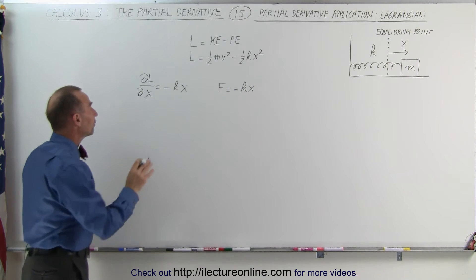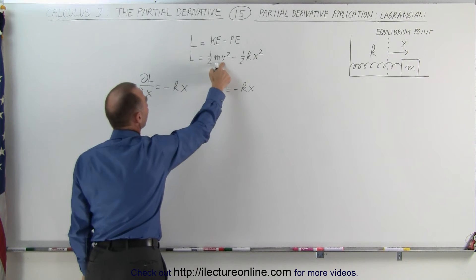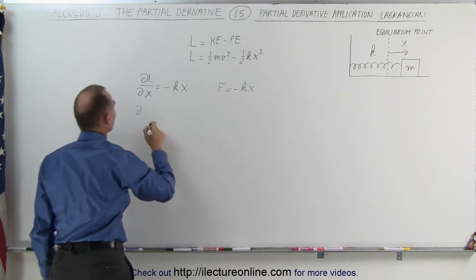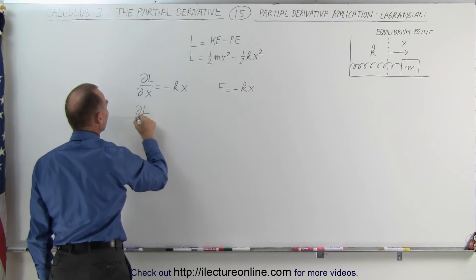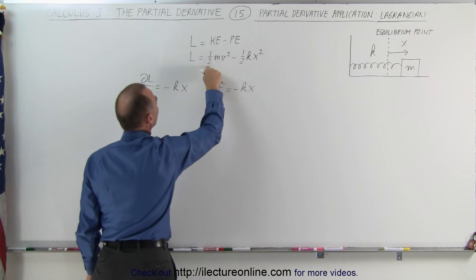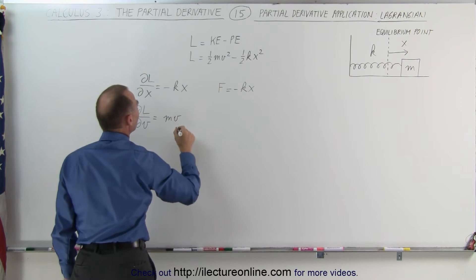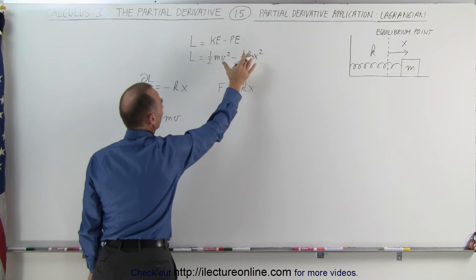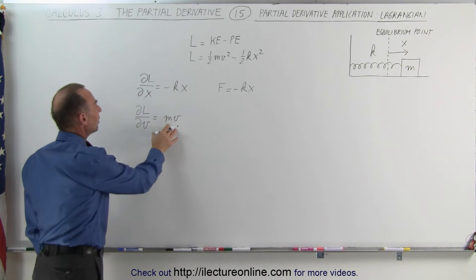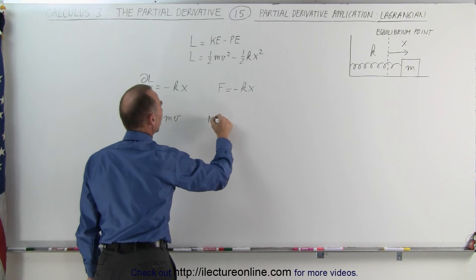Now we're going to take the partial of the Lagrangian with respect to the other variable, the variable v. When we do that, the other variable becomes a constant. The partial of the Lagrangian with respect to v is equal to 2 times 1/2, which is 1, m times v. Notice that the potential energy term is a constant, so it simply drops out when we take the partial derivative with respect to v. This represents m times v, which is the momentum of the particle.